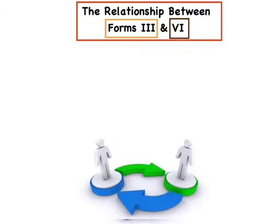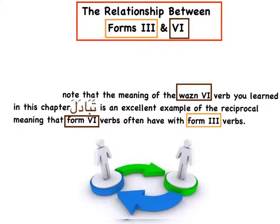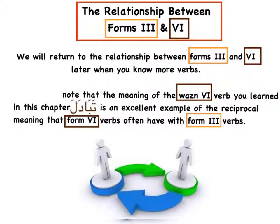The relationship between forms 3 and 6: the meaning of the wazn 6 verb in this chapter — تبادل (tabadala) — is an excellent example of the reciprocal meaning that wazn 6 verbs often have with form 3 verbs. So بادل (badala) and تبادل (tabadala) both share the meaning of reciprocal exchange. We will return to the relationship between forms 3 and 6 later when you know more verbs, but tabadala is a good example of wazn 6 and how it relates to wazn 3.